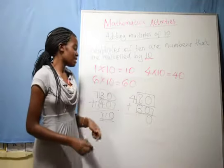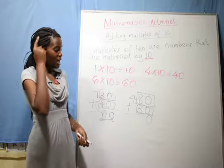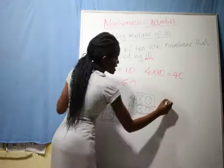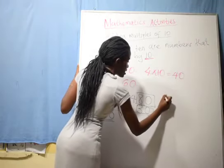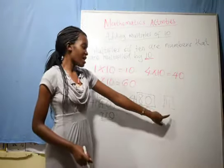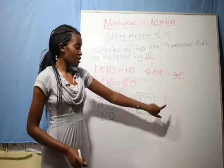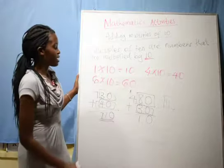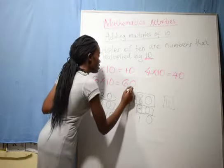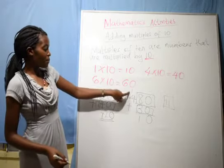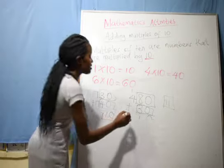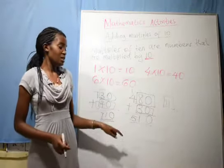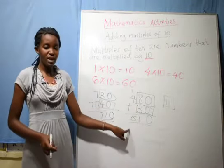8 plus 3, put 8 on our head. 8, 9, 10, 11. We get 11. Write 11 in a box. In 11, we have 1 tenth and 1 ones. Now, we write ones here. Then you count another one there. Now, it will be 4 plus 1 plus 0. We get 5. When we add 480 to 30, we get 510.